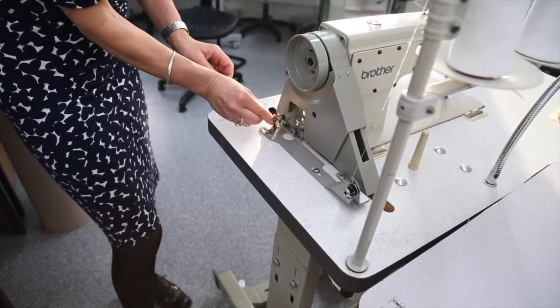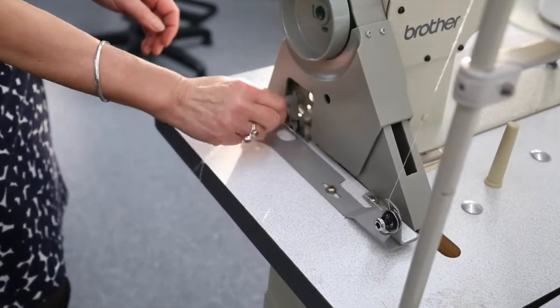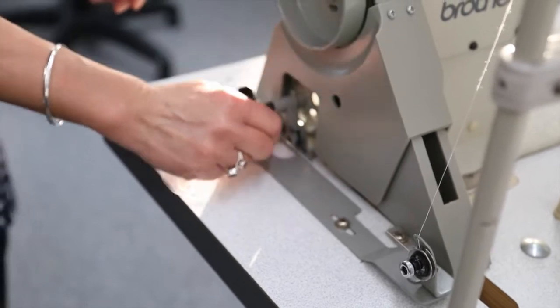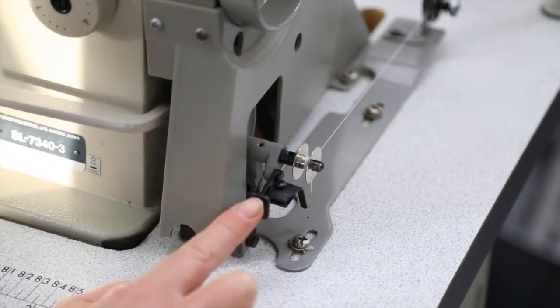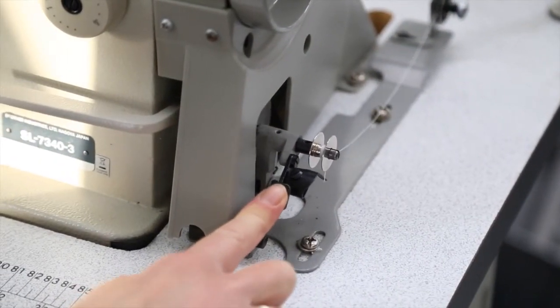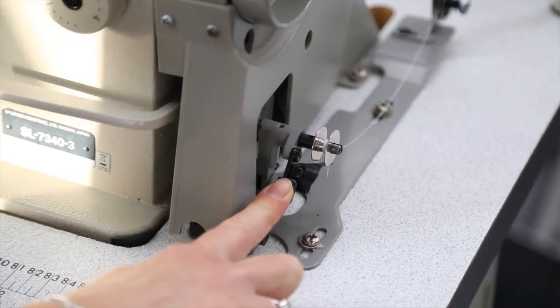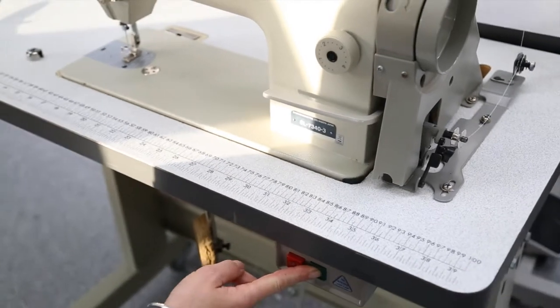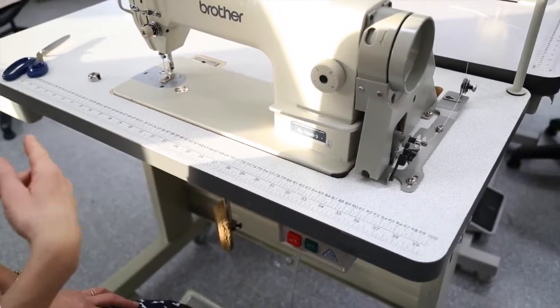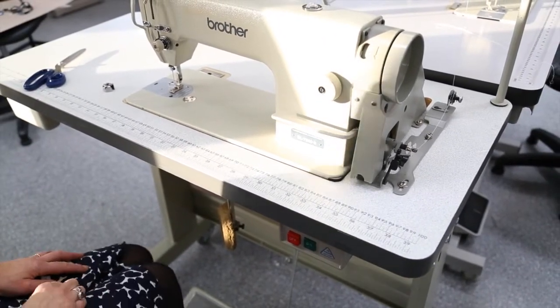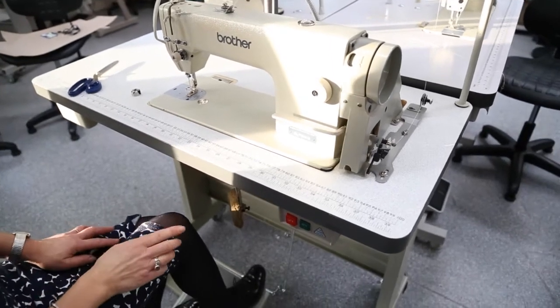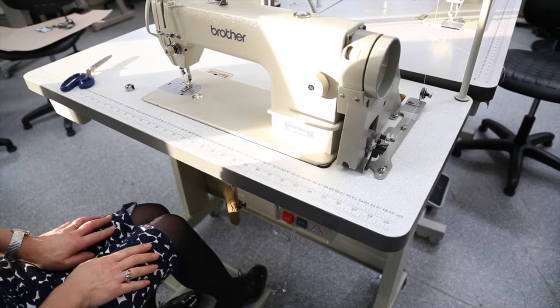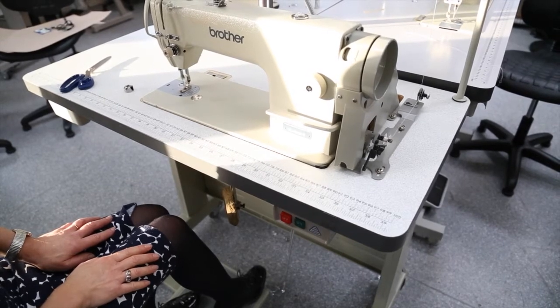Then we're going to wind the bobbin thread around the bobbin a few times just to get it started, and then we need to push this forward and turn on the machine. We need to wait for it to warm up and then with our feet on the pedal, it's now winding.